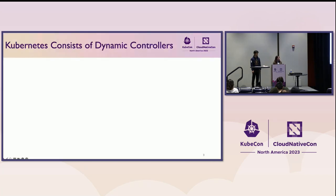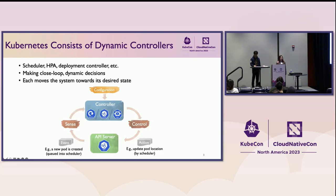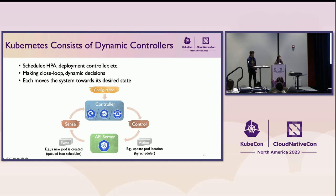As you may know, Kubernetes consists of dynamic controllers, including the scheduler trying to place pods onto nodes according to some strategies, and HPA trying to automatically scale up and down pods according to CPU usage, for example. All those controllers make closed-loop dynamic decisions, collecting metrics from the underlying API servers and deploying controls by updating objects.